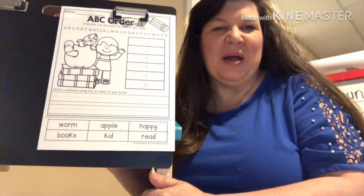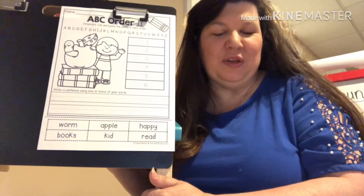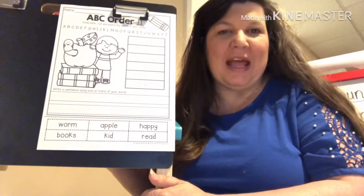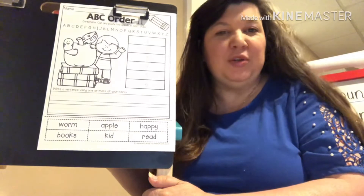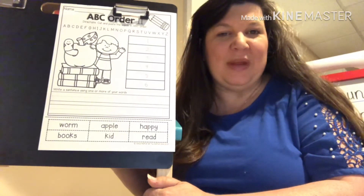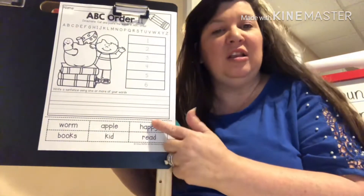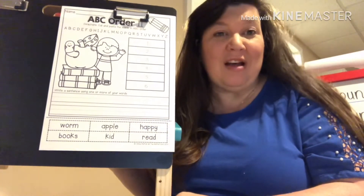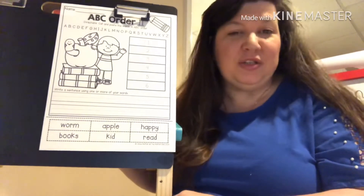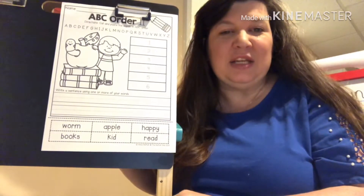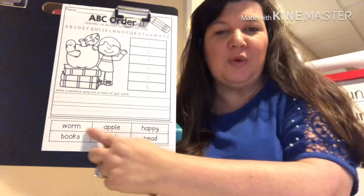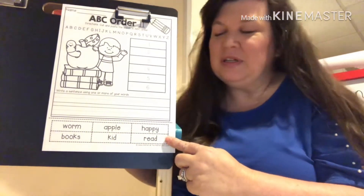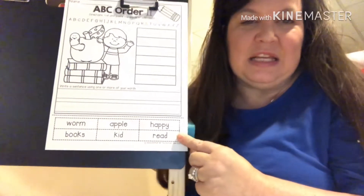Hi boys and girls, today we are going to learn another new concept and it's called alphabetical order. So you are going to have in your packet this week a sheet that looks a lot like this — it's not exactly the same, but it looks a lot like it. What you're going to do is read the words at the bottom and then cut them out. Let's go ahead and read these words.